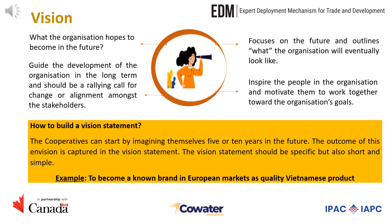Let us first consider the vision. An organisation's vision describes what the organisation hopes to become in the future. The vision can act as a compass to guide the development of the organisation in the long term and should be a rallying call for change or alignment amongst the stakeholders. A vision focuses on the future and outlines what the organisation will eventually look like, inspiring people and motivating them to work together toward the organisation's goals. To build a vision statement, cooperatives can start by imagining themselves 5 or 10 years in the future. The vision statement should be specific but also short and simple. One example is: to become a known brand in European markets as quality Vietnamese products.